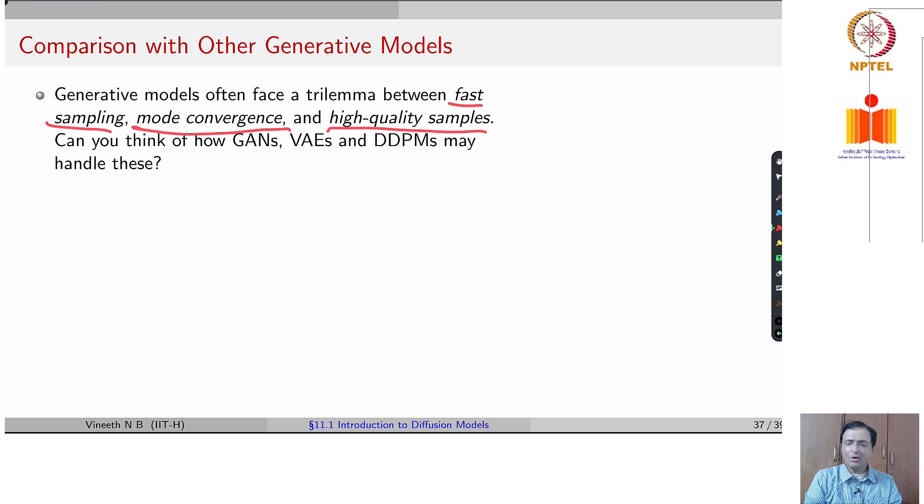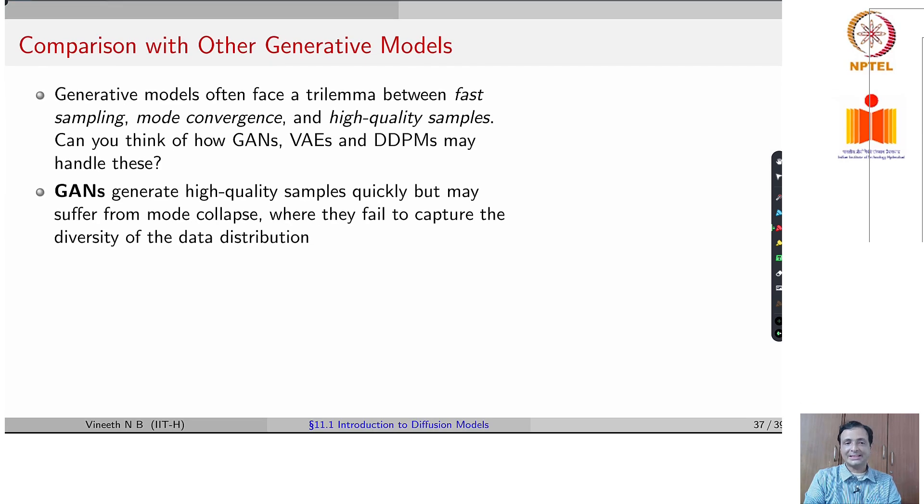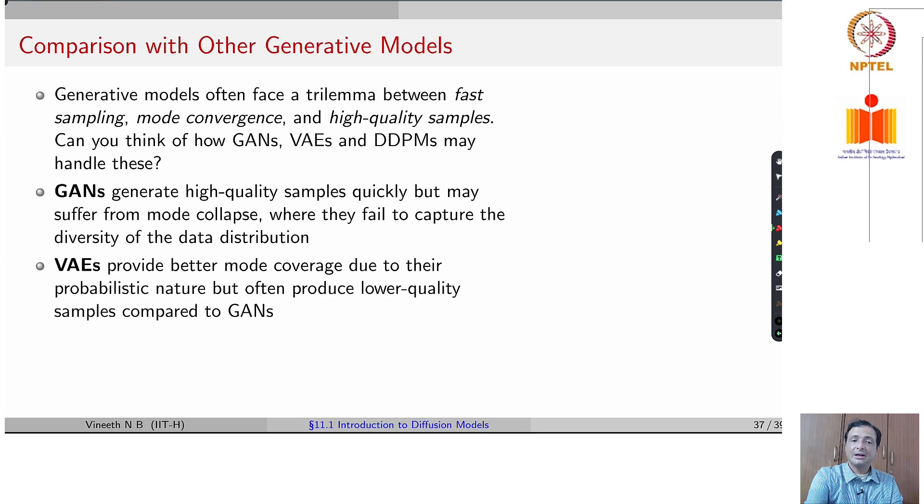Can you think of how GANs, VAEs and diffusion fare on these three aspects? It is interesting to analyze that. GANs generate high quality samples, but suffer from mode collapse. DDPMs, VAEs provide better mode coverage because of their probabilistic nature, but do not provide high quality generations.